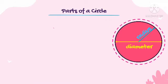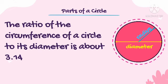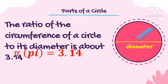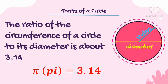The terms we mentioned — the parts of a circle — have relationships with each other. The ratio of the circumference of a circle to its diameter is about 3.14. So when we get the ratio of the circumference and compare it to the diameter, it is about 3.14. And 3.14 is also called pi.